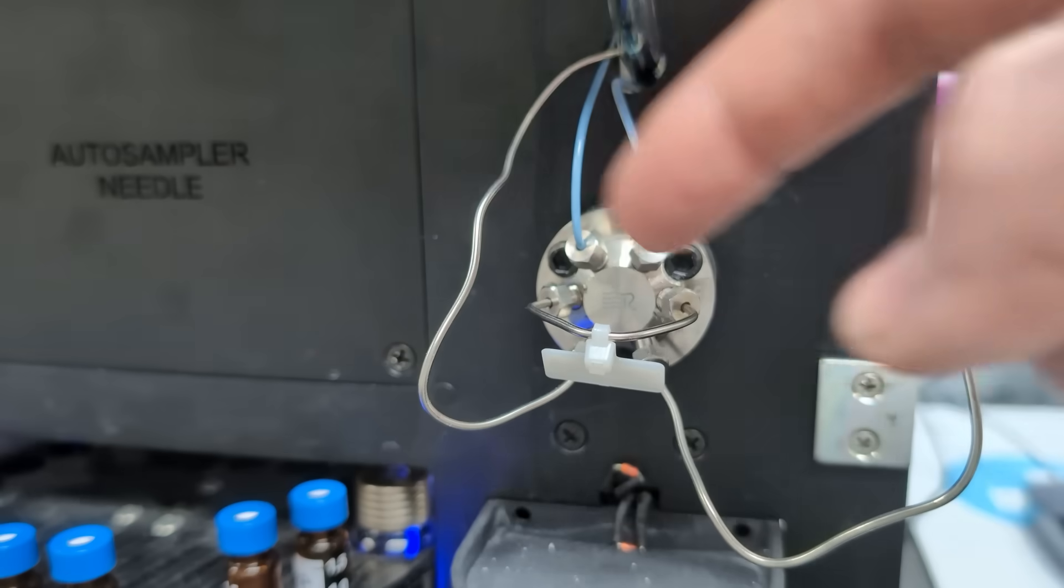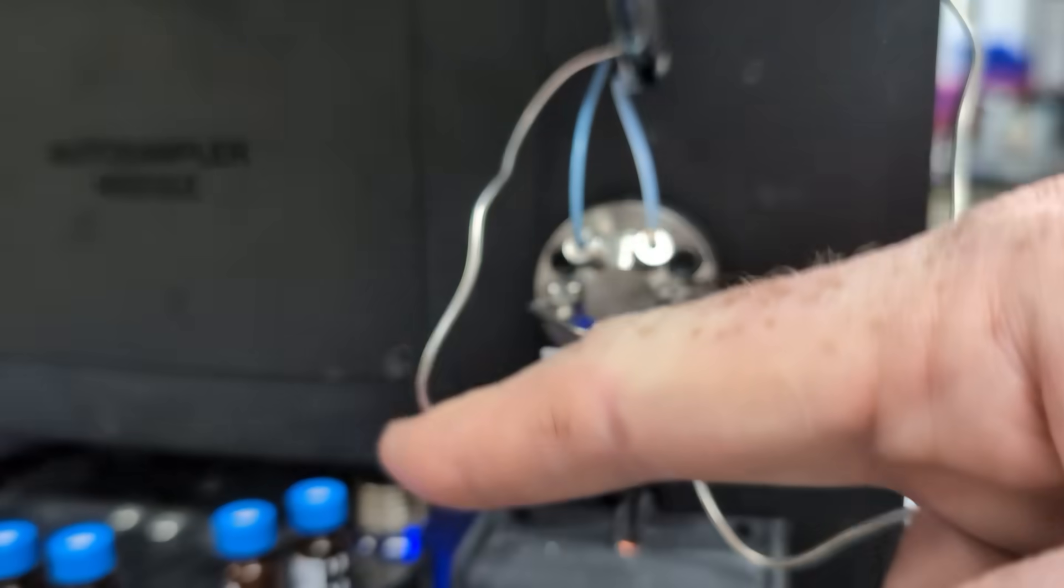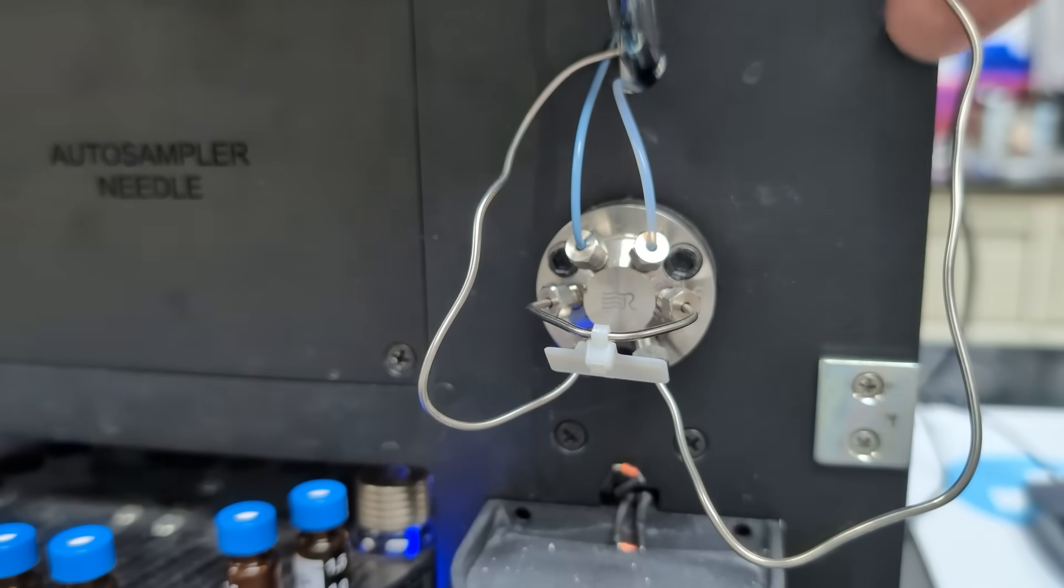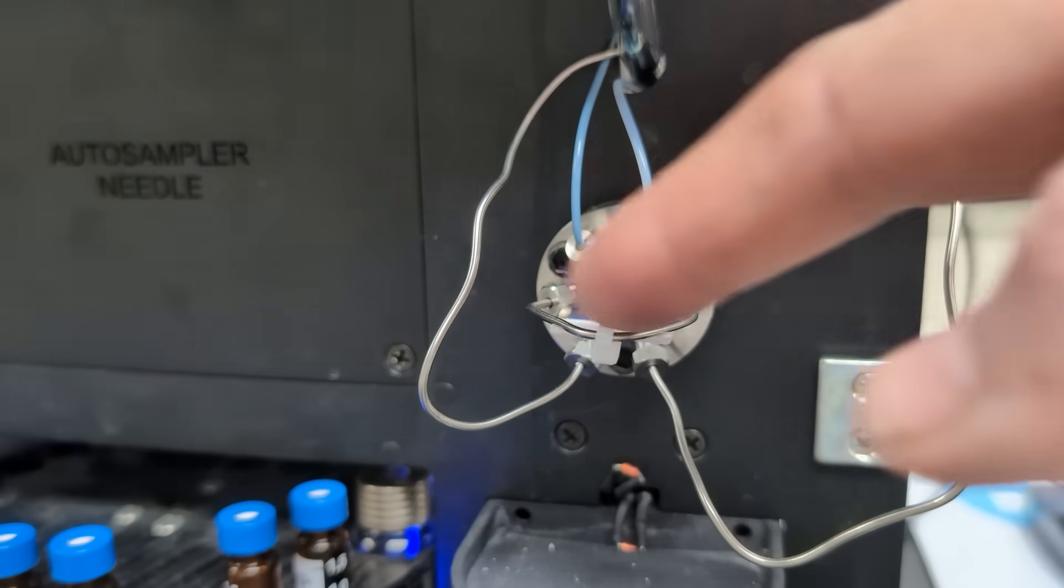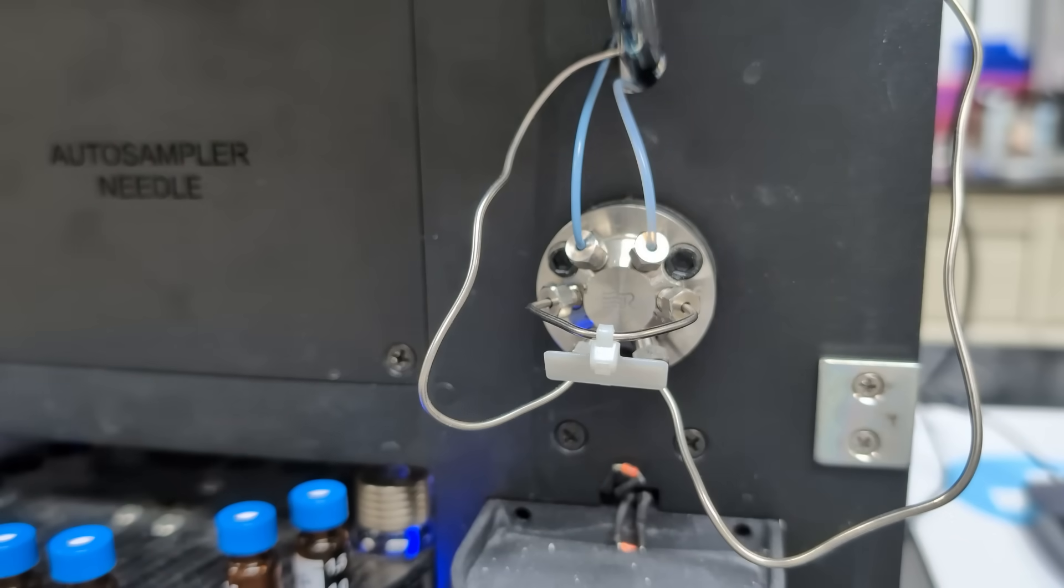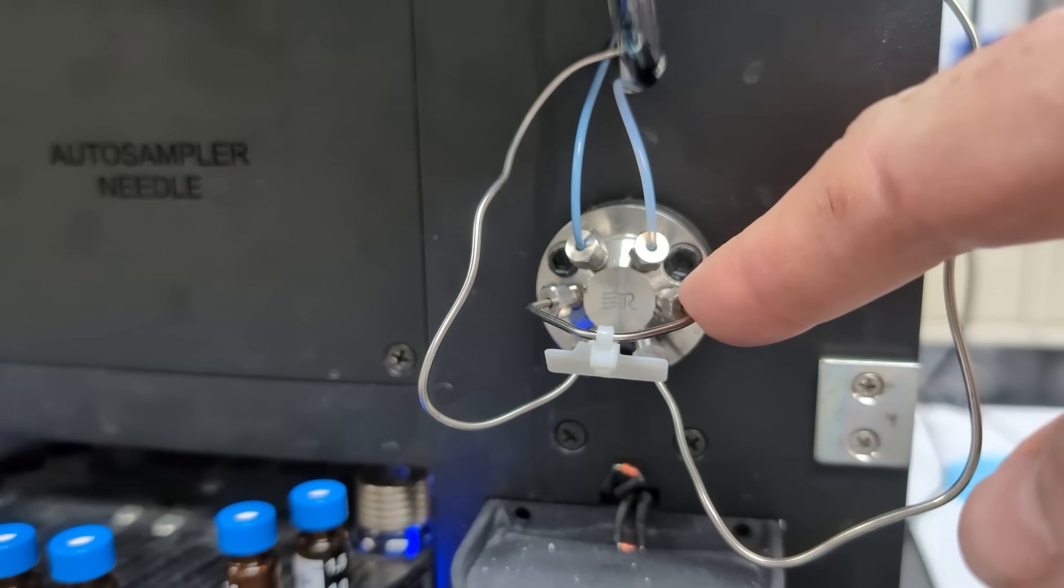If that's all connected, then the pump is connected here directly to our column, allowing mobile phase to bypass our sample loop. Once the loop is full, then our injection valve turns, and once that turns, then the needle is connected directly to our sampling syringe.